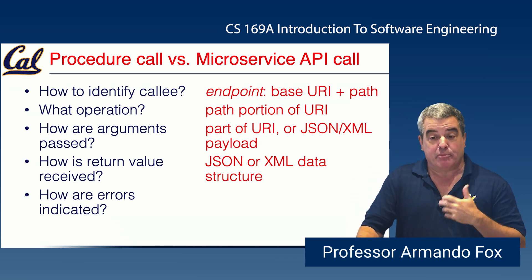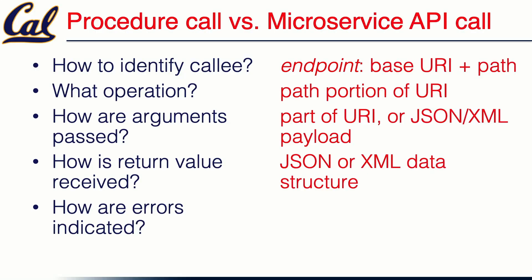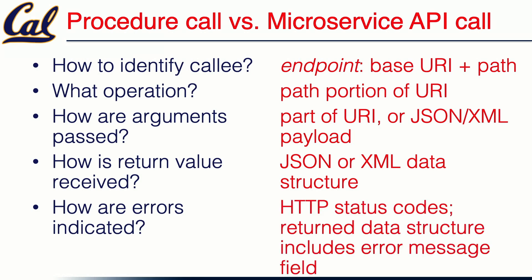What about the return value? These days, overwhelmingly it's a JSON data structure. It could be XML in principle — it can be anything — but JSON and XML are by far the most common conventions. How do you indicate if an error happened? Good news: we're doing all of this over HTTP, which already has a way to indicate errors with all those different error codes. The HTTP code will indicate whether the operation succeeded, and the data structure in case of failure might contain a helpful string or human-readable explanation of the problem.